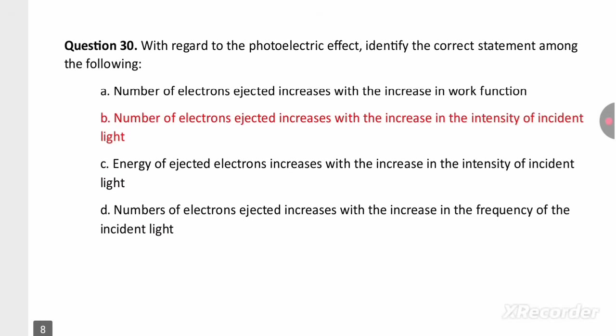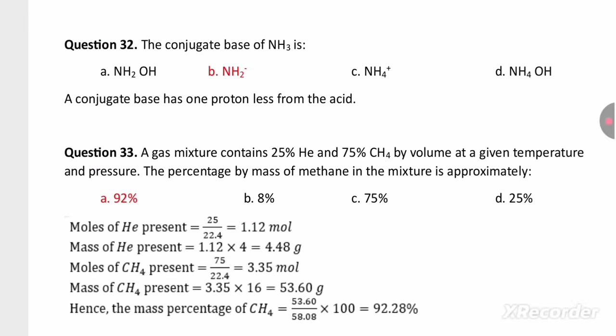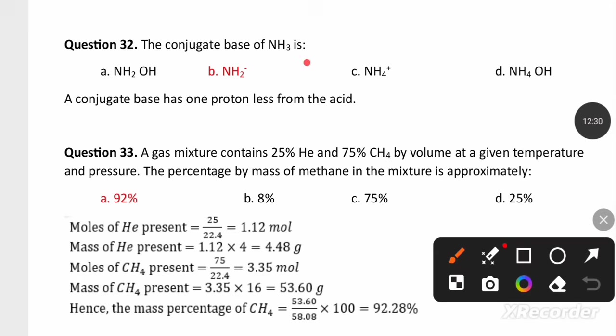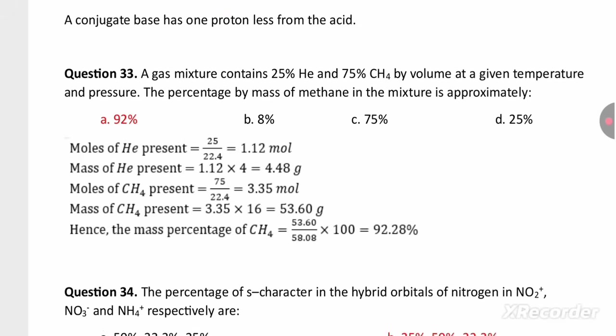Regarding the photoelectric effect, the correct statement is that the number of electrons ejected increases with increasing intensity of incident light. The conjugate base of NH3: since a conjugate base has one proton less than the acid, the conjugate base of NH3 is NH2−.